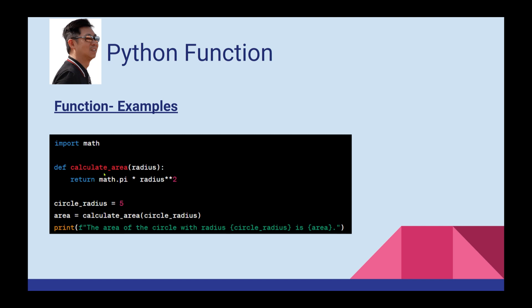So the circle area function is defined like that. To call it, set radius equal to 5 and call circle_area(5). The radius argument is passed to the function parameter. Then print: 'Area of the circle with radius 5 is', followed by the result.